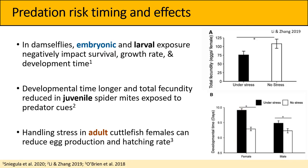A good illustrative example of predator cue exposure specifically over short periods in adults was harder to find, but one study looked at handling stress in adult cuttlefish females and found that it reduced egg production and hatching rate.